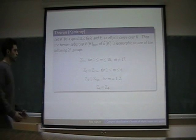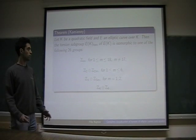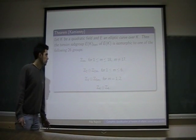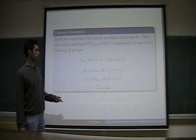If we examine the possible torsion subgroups of elliptic curves over all quadratic fields, then the possible torsion subgroups are these 26 groups.